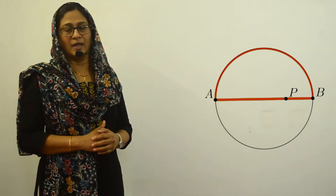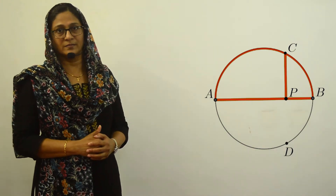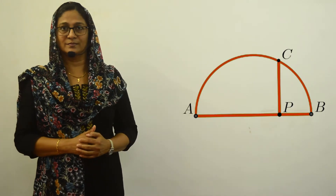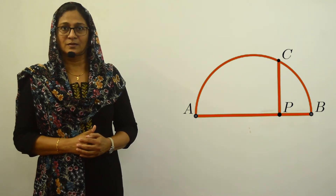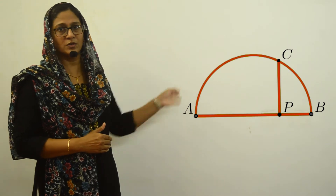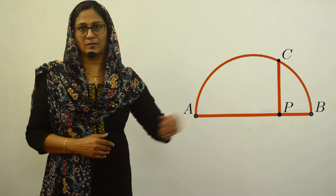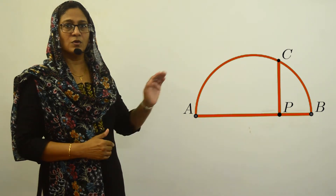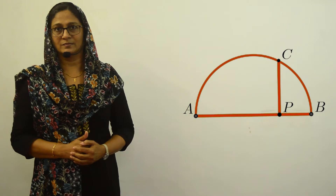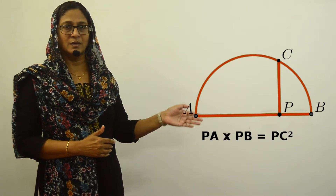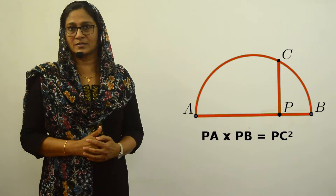Let us think about our second result about intersecting chords. Suppose one of the chords is a diameter and the second chord is perpendicular to it. We had the result that PA multiplied by PB equals PC squared. We need not draw the full circle — only the semicircle with the diameter AB and the half perpendicular chord PC. From this figure, PA multiplied by PB equals PC squared — that is our second result in intersecting chords.